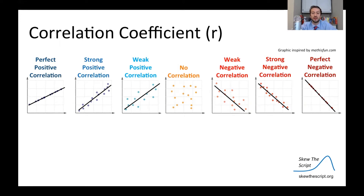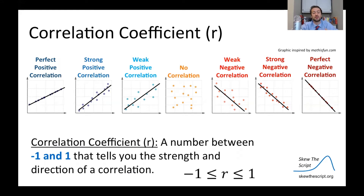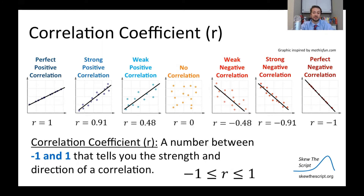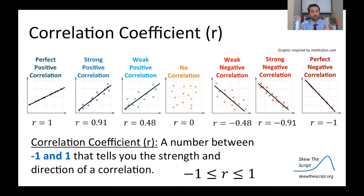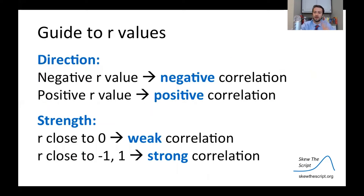This all boils down to what we call the correlation coefficient, which we call r. It's a number between negative one and one, inclusive, and it tells you both the strength and direction of a correlation. On the left side, perfect positive correlation is r equals 1; on the right, perfect negative correlation is r equals negative 1, with all sorts of values in between. When r is greater than zero, the slope of the line of best fit is positive, and vice versa when r is less than zero. When r is large in magnitude — close to 1 or close to negative 1 — the points are much closer to the line of best fit. When r is close to zero, you have a weak correlation; when r is close to negative one or one, you have a strong correlation.